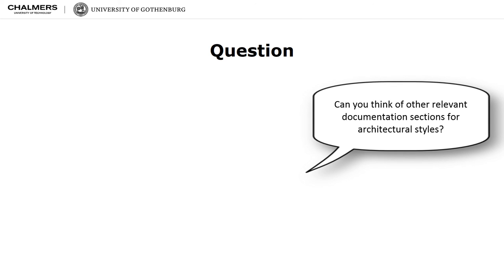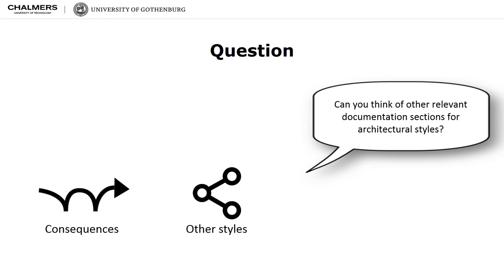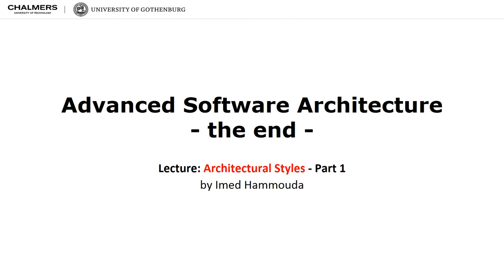Here is a question for reflection: can you think of other relevant documentation sections for architectural styles? Think, for example, about the consequences of applying a style in terms of the results, side effects, and trade-offs caused by using the style, or a set of related styles that have some relationship with the style at hand. This is the end of the Architectural Styles lecture, Part 1. Thank you for watching.